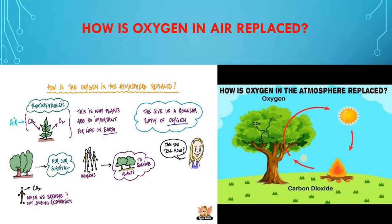Our next topic is how oxygen in air gets replaced. A large number of animals and plants are consuming oxygen from air for respiration. The oxygen of air is also consumed during the burning of fuels by human beings. Even so, all the oxygen of air does not get used up. We will explain how the oxygen in the air is replaced or refilled. The oxygen of air is consumed by animals for the process of respiration and in the burning of fuel, because oxygen is a strong supporter of combustion. It is replaced by plants through the process of photosynthesis, because plants produce oxygen.